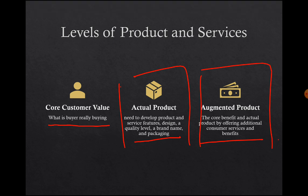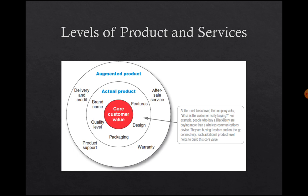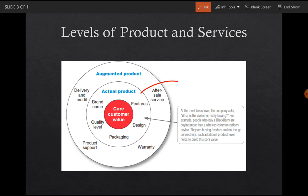When we talk about the actual product and the core customer value, we can see in this circle that in the middle is the core customer value. From this core customer value, what we can take out is the inner circle — the first circle — which is the actual product. In this layer you actually give certain features, different designs or packaging, the way you are packing that product or service, and the quality level.